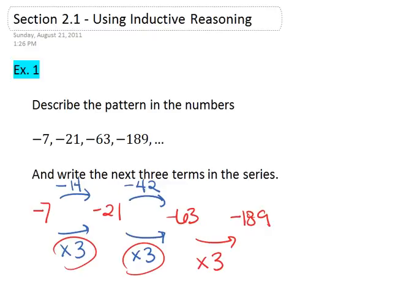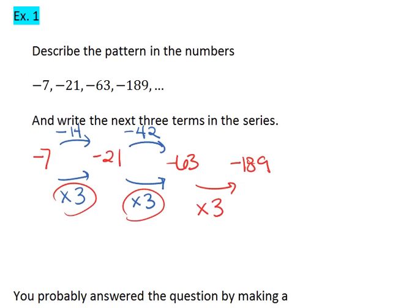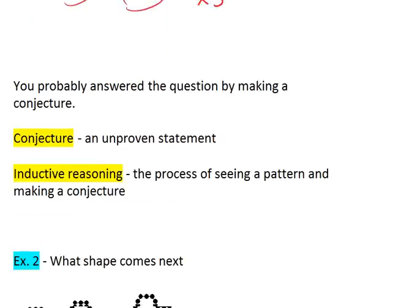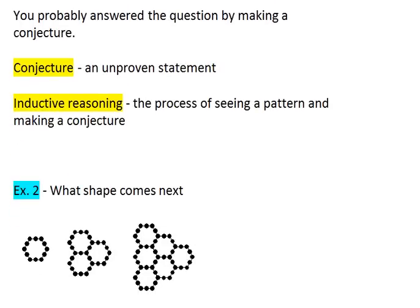However, there's no way for us to know this for sure. That's why what we come up with is called a conjecture. Let's scroll down to this vocabulary term. A conjecture is an unproven statement.